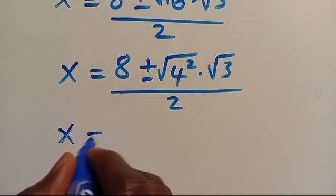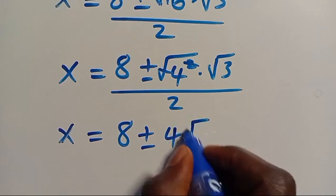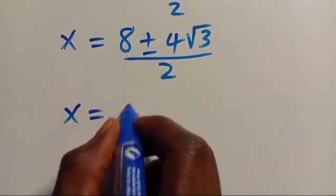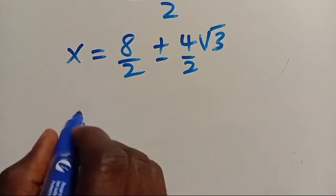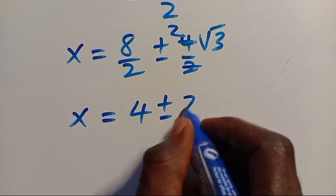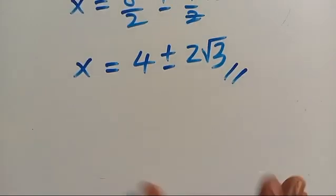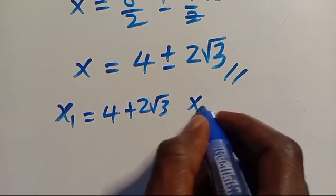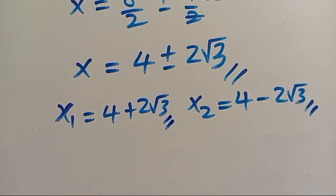From here, the 4 and the 2 simplify, giving us 8 divided by 2 equals 4, plus or minus 2 multiplied by root 3. So X1 equals 4 plus 2 multiplied by root 3, and X2 equals 4 minus 2 multiplied by root 3.